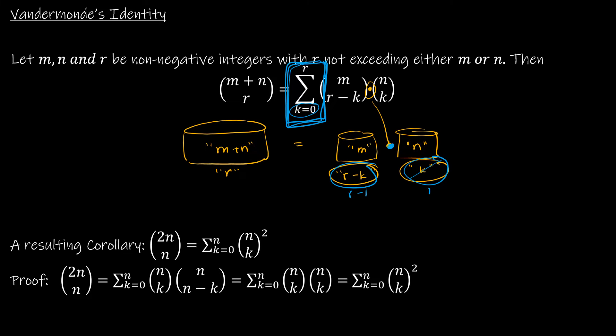We do want to look at a resulting corollary. And that comes from when m is equal to n is equal to r. So before I look at what I've uncovered here, let's take a look at m plus n choose r.